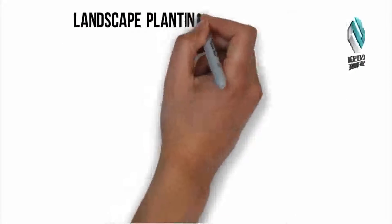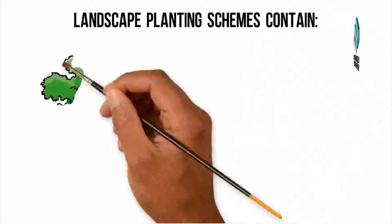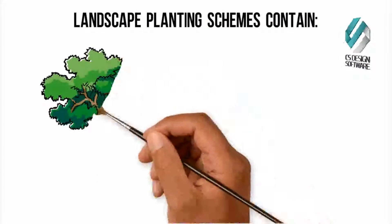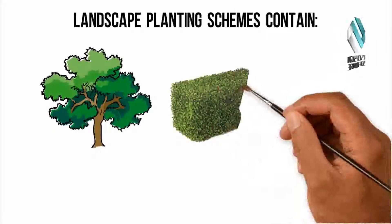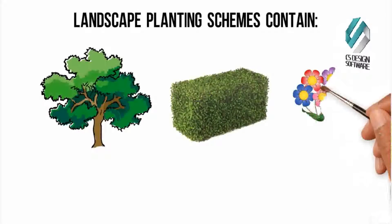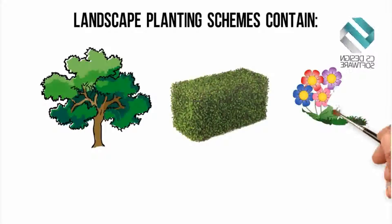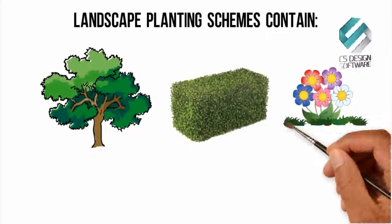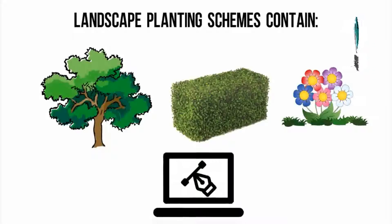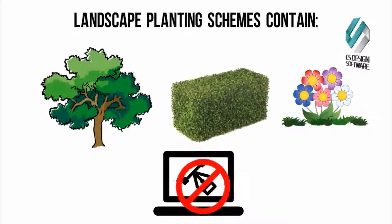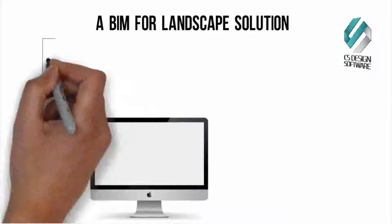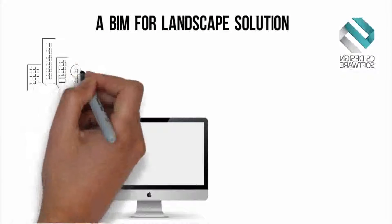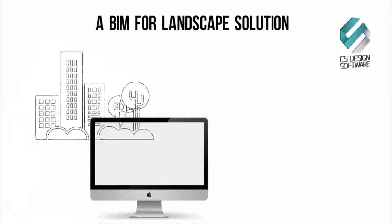Landscape planting schemes contain large planting areas, hedges, mixes, specs, percentages, planting centres. Can your current software manage this info? No! A BIM for Landscape solution gives you fully collaborative data exchange for landscape design, not building design.